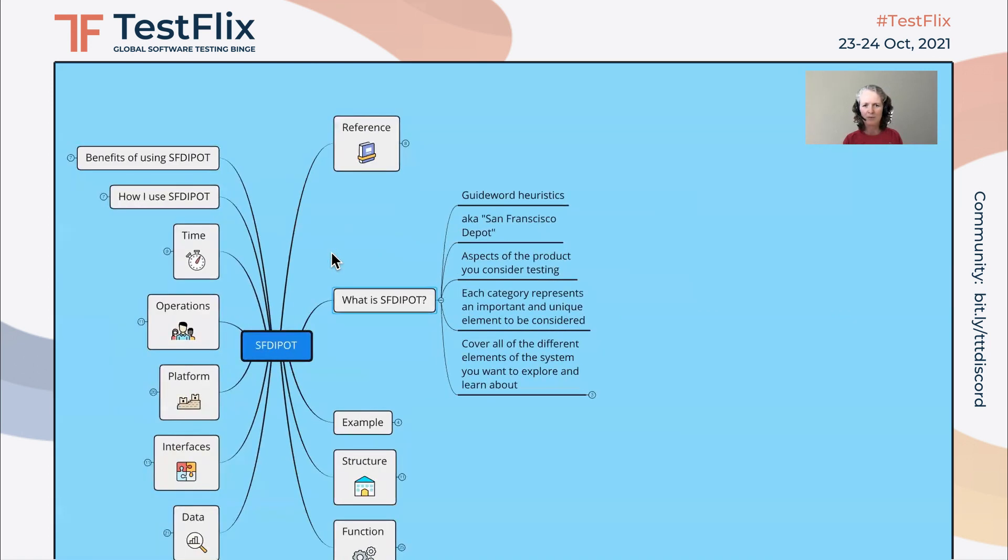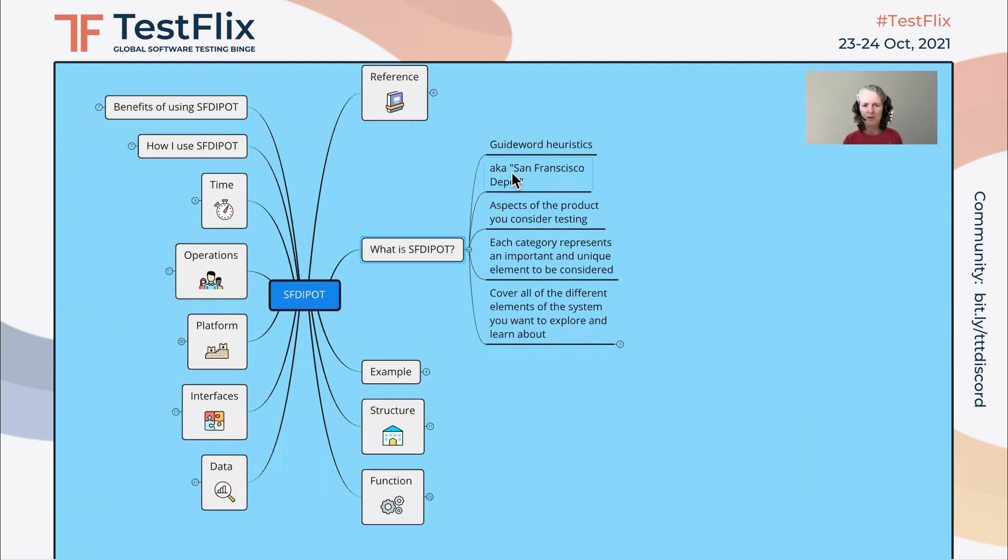It's called San Francisco Depot because it helps you remember the guide words which are structure, function, data, interfaces, platform, operations, and time. These are all aspects of the product that you would consider testing.